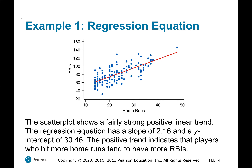Example one: regression equation. The scatter plot shows a fairly strong positive linear trend. You can see that the data is close together and going up in a positive direction, going roughly like a line. The regression equation has a slope of 2.16.